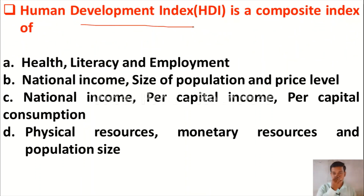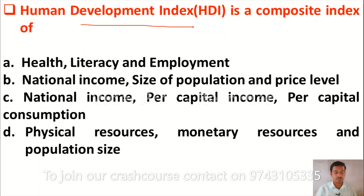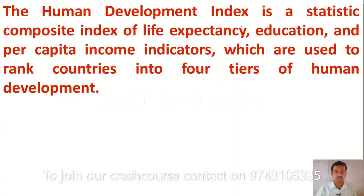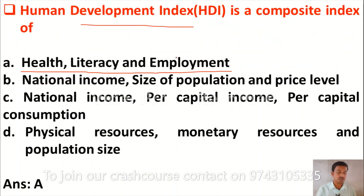The next question is: the Human Development Index (HDI) is a composite index of — option A: health, literacy, and employment, option B: national income, size of population, and price level, option C: national income, per capita income, and per capita consumption, option D: physical resources, monetary resources, and population size. The correct answer is option A. HDI is a composite statistic of life expectancy, education, and per capita income.